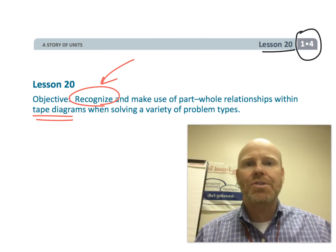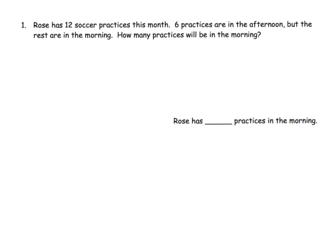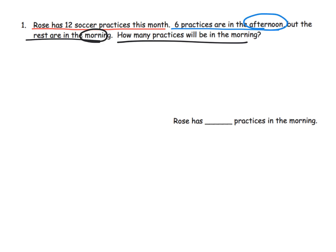So let's get started. Rose has 12 soccer practices this month. Six practices are in the afternoon, but the rest are in the morning. How many practices will be in the morning? As I read this, I'm thinking about characters, and this story problem has two characters: afternoon and morning.